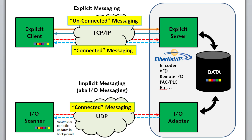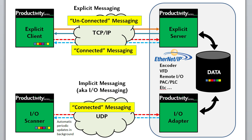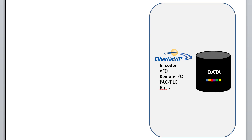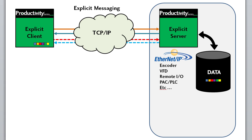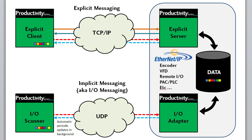Why have both types of connected messaging? Because some vendors of EtherNet/IP devices use TCP/IP and some use UDP — it all depends on how they want to communicate with the outside world. The good news is the Productivity family of controllers supports all of these, so if you have an EtherNet/IP device that uses explicit or implicit messaging, you're in business with any Productivity Series controller that supports EtherNet/IP.